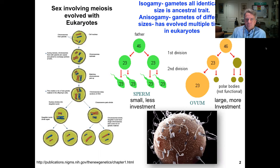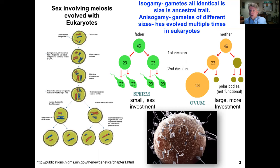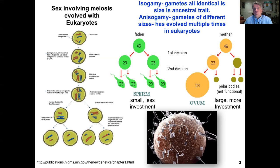Sex with meiosis evolves in eukaryotes. A couple of terms to familiarize ourselves with: isogamete, where gametes are all identical in size — this is thought to be the ancestral trait for eukaryotes. The derived trait is anisogamete, where gametes have different sizes between the sexes, between males and females, and this has evolved multiple times in eukaryotes.